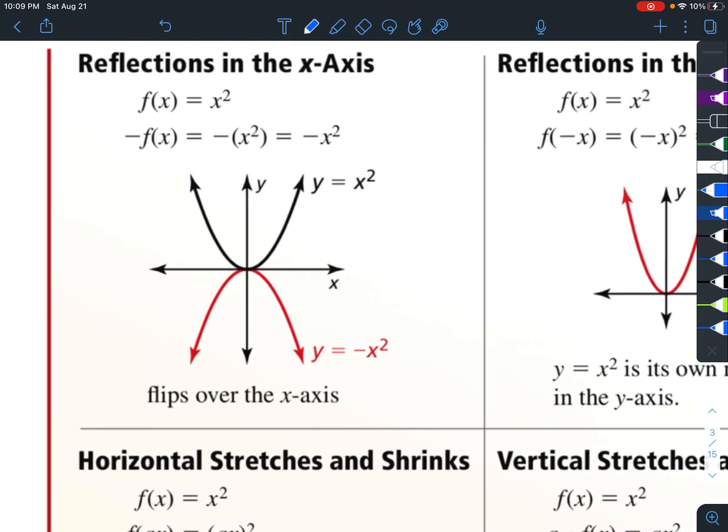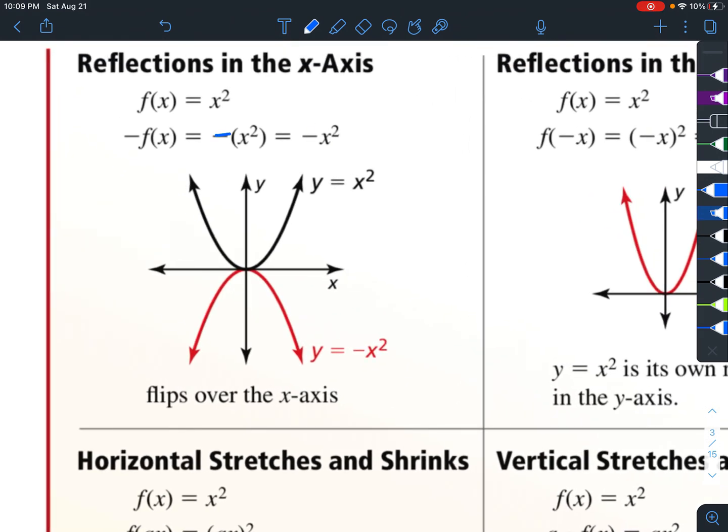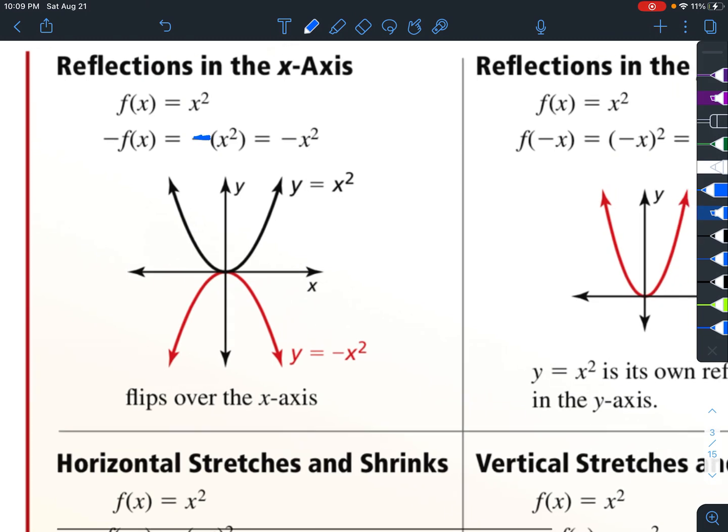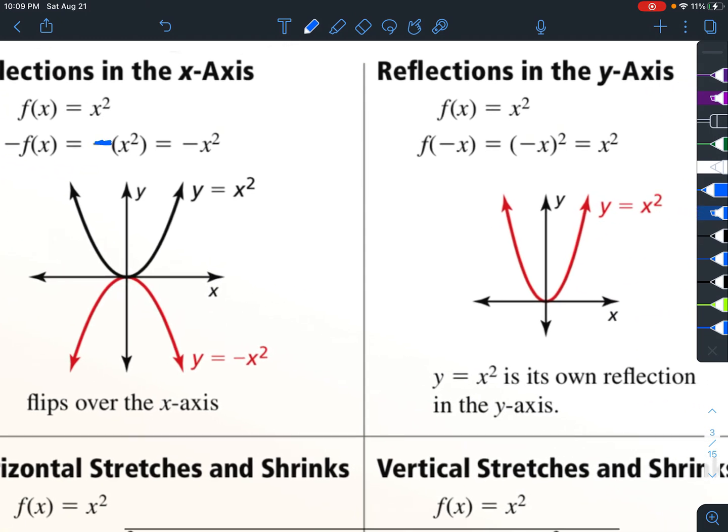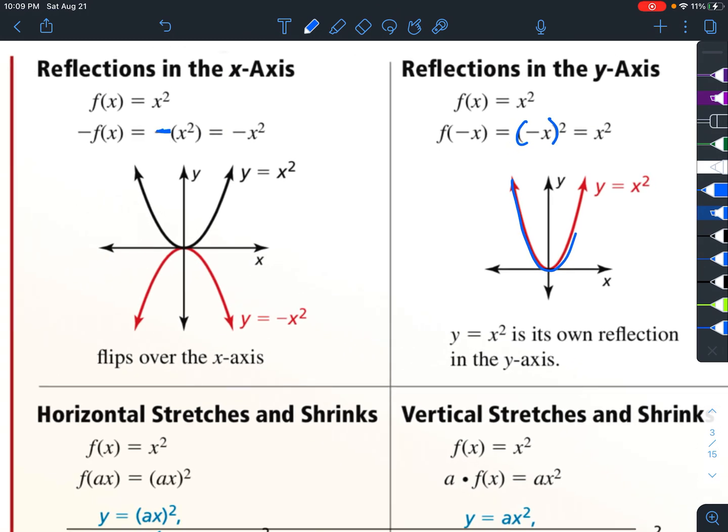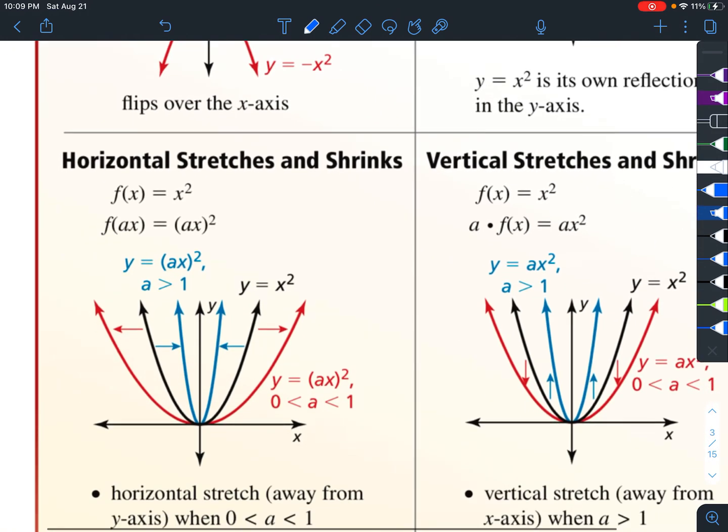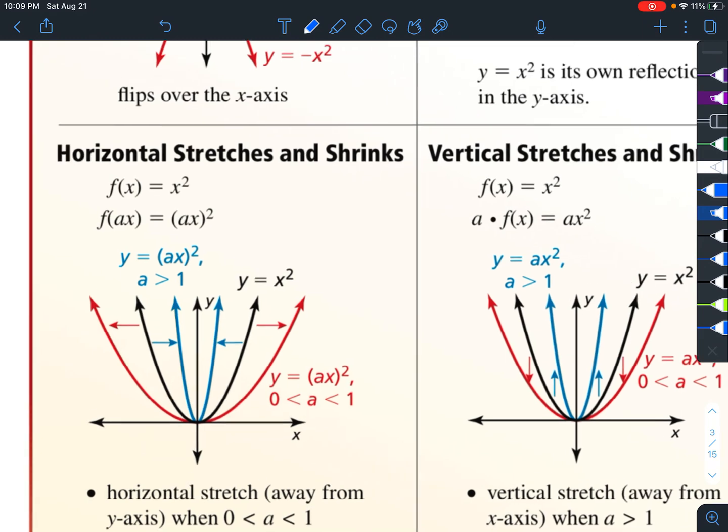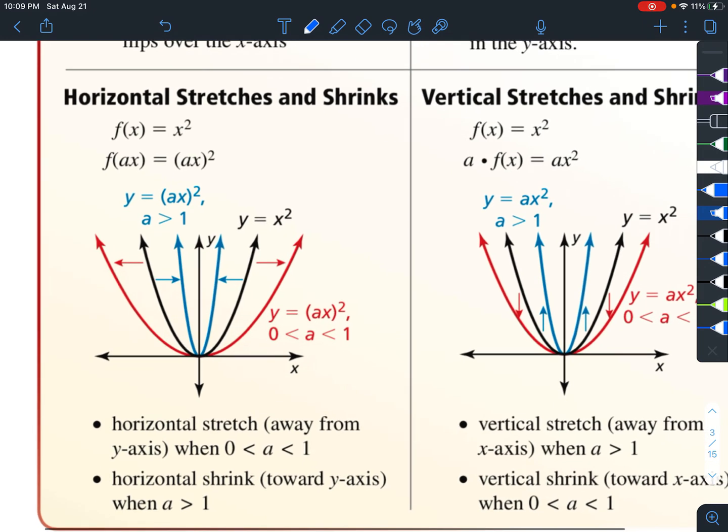Let's look at the next ones. If you have a negative in front of your x², the whole thing is going to flip over the x-axis. If you have a negative inside the squared part, then it's going to reflect across the y-axis. And horizontal stretch and shrink—these ones can be a bit more confusing.